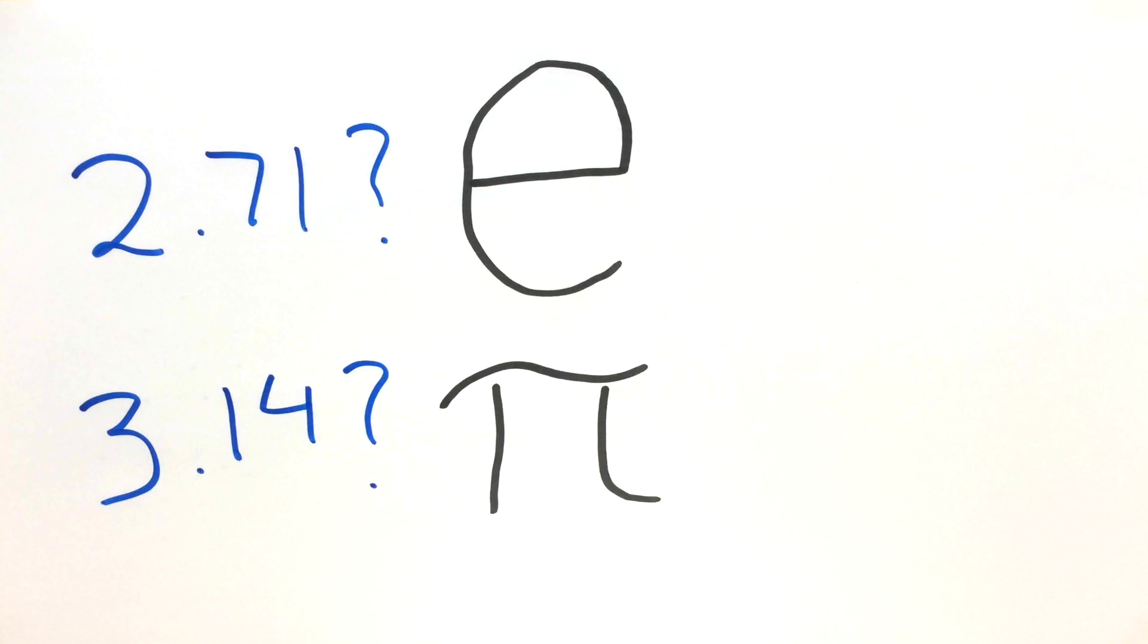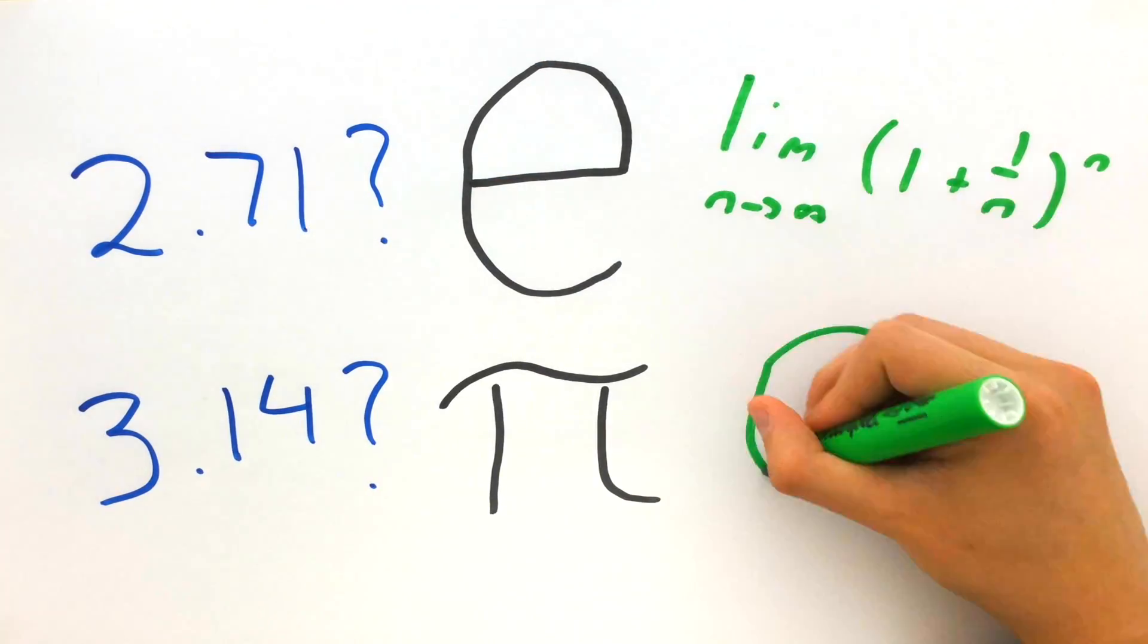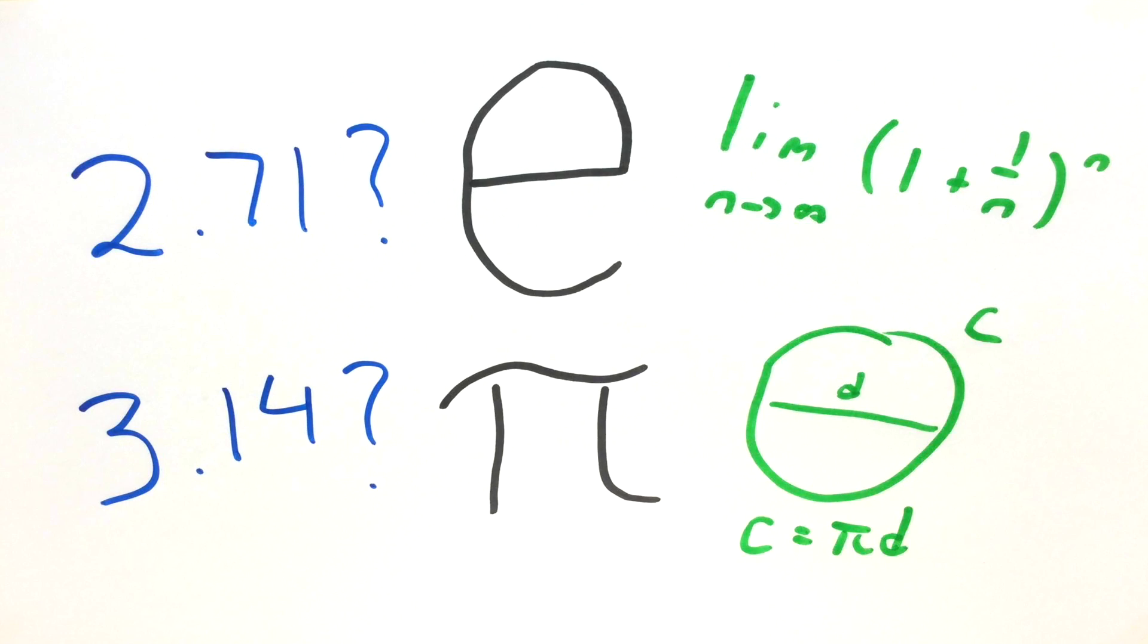2.71? 3.14? There are plenty of ways to approximate and visualize these numbers, but how can we classify them?